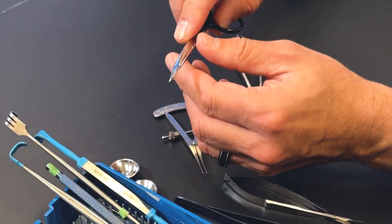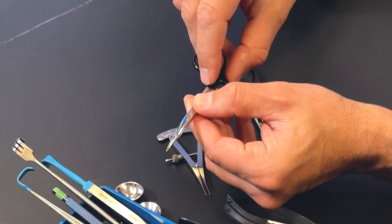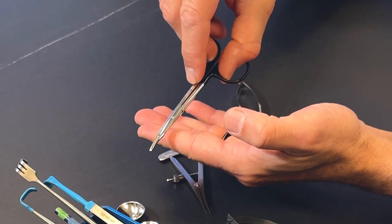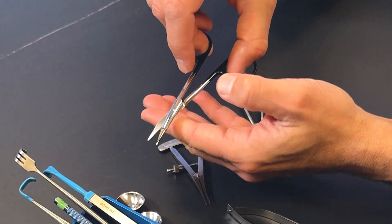There's various kinds of scissors I use. If I need to identify fat in the upper eyelid, I'll spread with these tenotomy scissors, and it allows me to gently spread, find the fat, and then gently trim it.